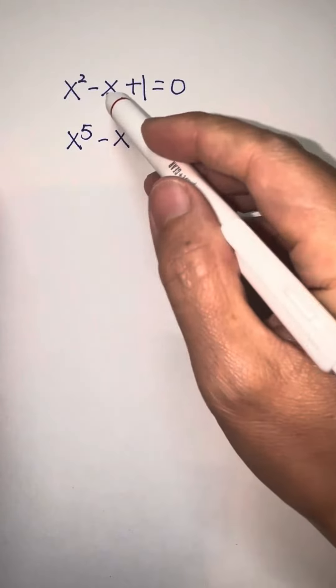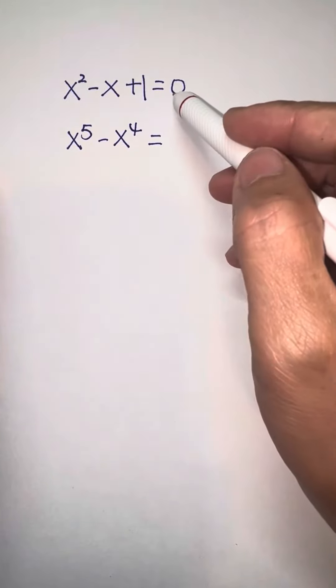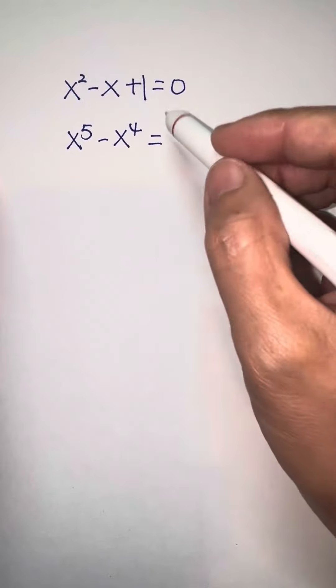Hi guys, come out here. x squared minus x plus 1 equals 0. What is x to the power 5 minus x to the power 4?